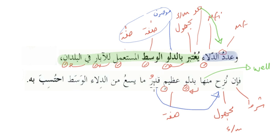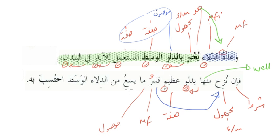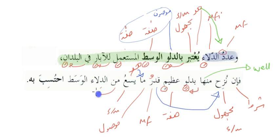قدر means what is taken out — the amount. At the same time this is مضاف. ما يسع من الدلاء الوسط — ما is موصول. يسع means holds or contains — it is a فعل single masculine present tense and the ضمير هو goes back to ما.